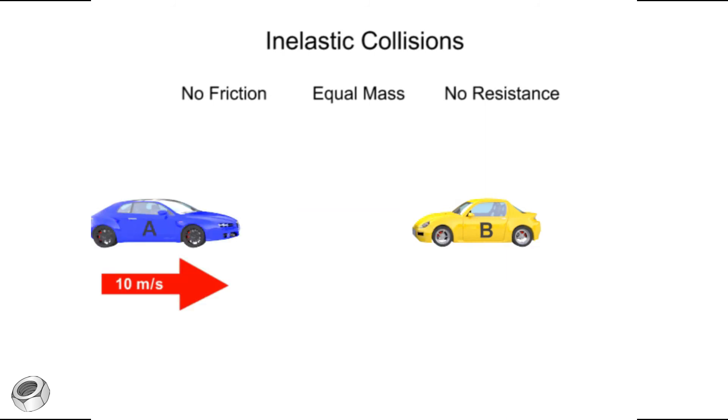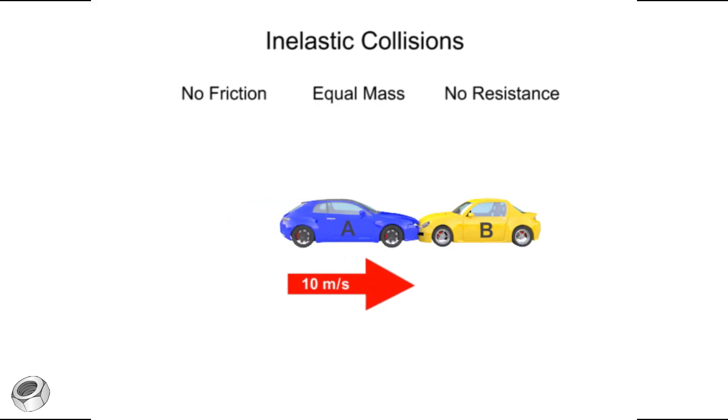Momentum after the accident, however, is conserved. With no road resistance, the doubly massive car wreck will continue moving in the same initial direction as car A, but at half the speed.